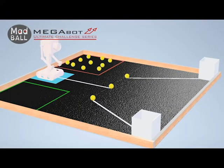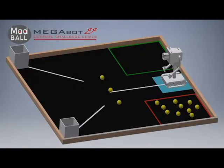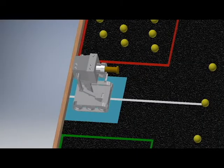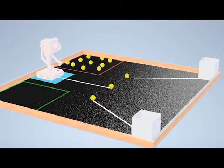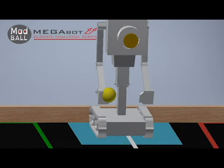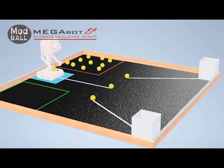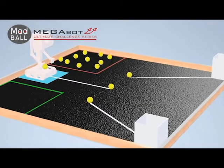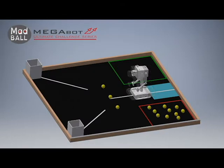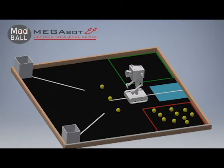Robots must start within an imaginary 46cm starting cube and can expand after the start of the game. Robots are pre-loaded with one Madball at the start of the game. The game period is 3 minutes long and robots need to operate autonomously for the entire duration.